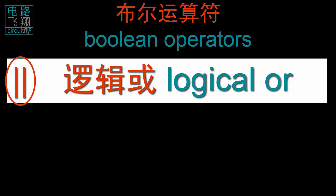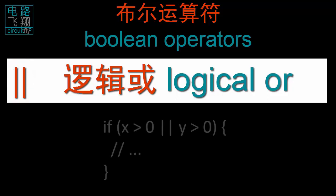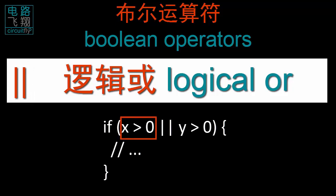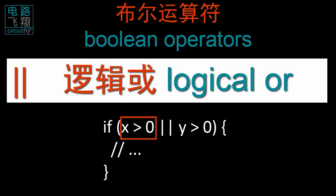举例来说，if x大于0，逻辑或，y大于0。无论是x大于0，还是y大于0，逻辑或运算结果都为真值。For example, if x greater than 0, logical OR, y greater than 0. The condition is true if either x or y is greater than 0.